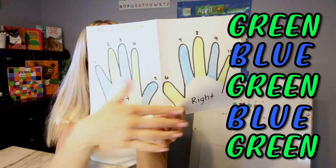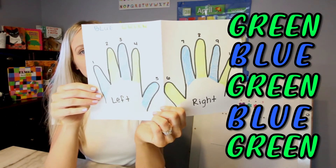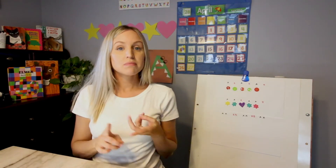This is a pattern. You can make patterns from different things — shapes, sizes, colors. You can even do patterns using your hands. Let me show you. We can clap, snap, snap, clap, snap, snap.